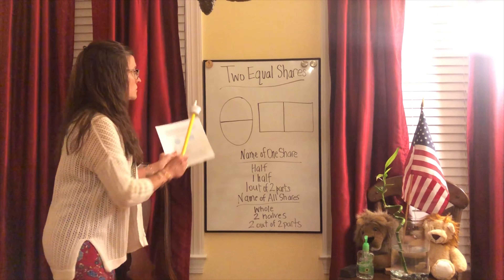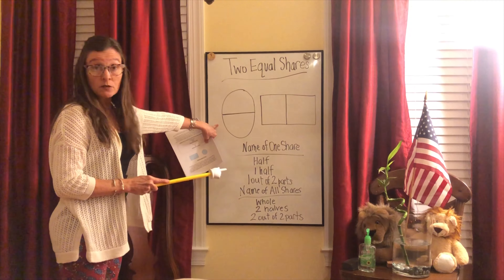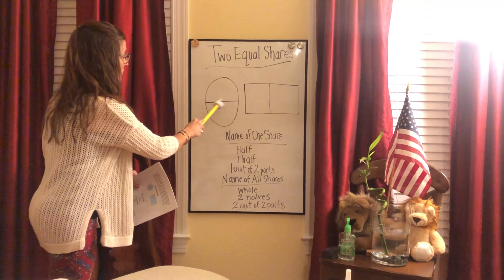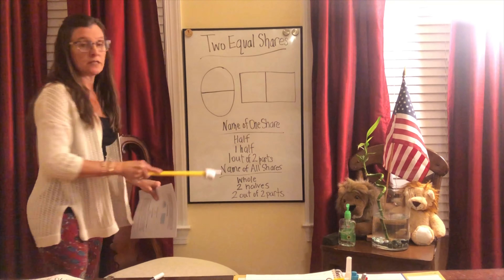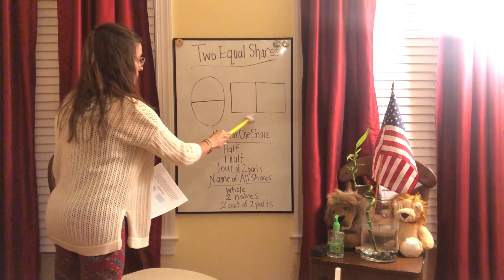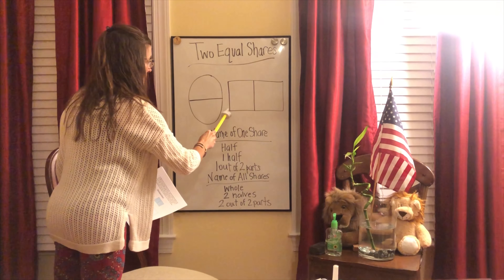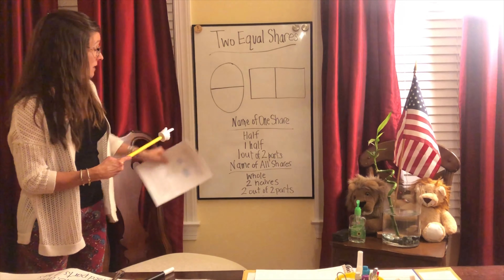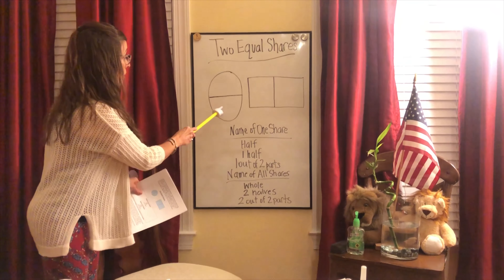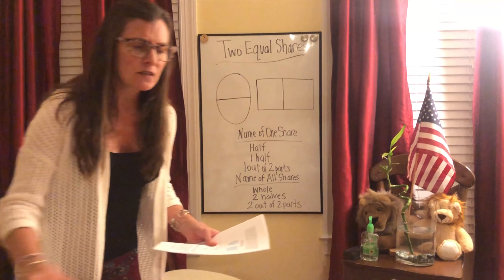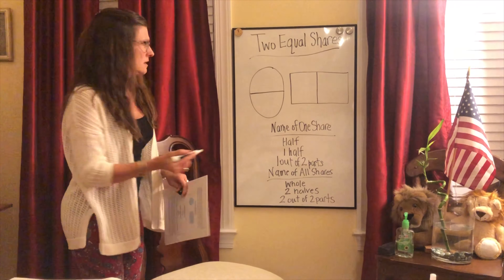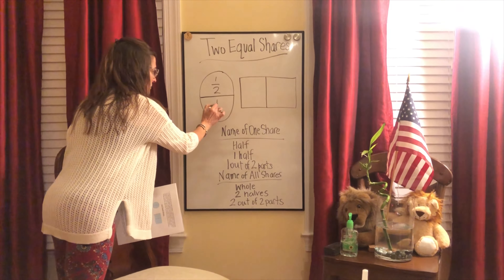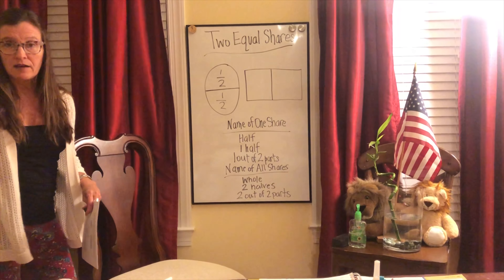That is our lesson today — halves. Two parts of a pancake. Now let's look at the board. Two equal shares — consider this our pancake. I divided it the first time vertically, up and down. Here we divided it side to side, but one half equals the other — that is an equal share. Looking at this rectangle: we divide it right down the middle, and when we name one share we can call it a half, or one half, or one out of two parts. As a fraction, up here is one of these two parts, and right here is the other one of these two parts — that's a half, an equal share.